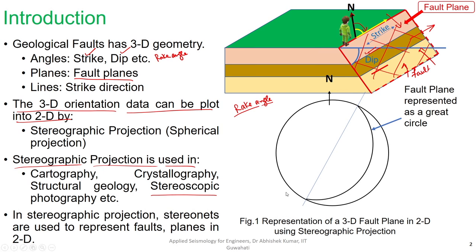As shown in the figure, the actual fault plane exists in three-dimensional space with some value of dip and strike, which can change. The stereographic projection is a method to represent these three-dimensional space characteristics on a two-dimensional space. One typical example shows the primitive circle, where what was available in three dimensions has been represented using stereographic projection in two-dimensional space. How these two are correlated will be discussed in subsequent slides.